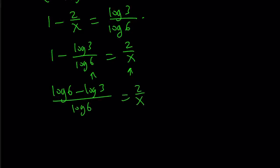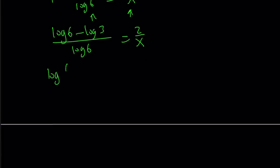Now, log 6 minus log 3 from properties of logs can be written as log 6 over 3, which is log 2, by the way. So this becomes log 2 over log 6, and that's equal to 2 over x.